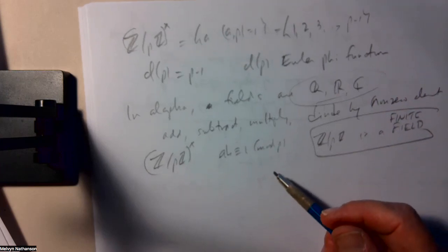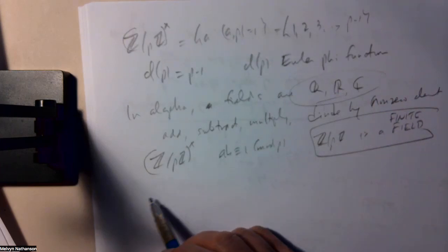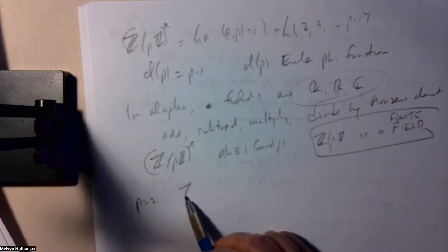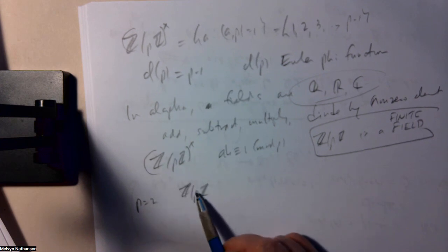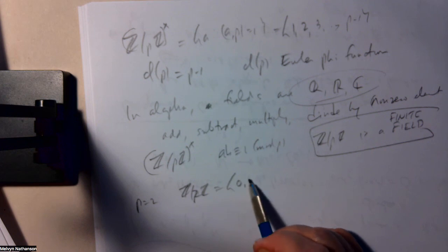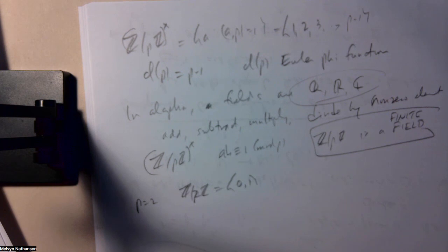In computer science, the simplest example is when p is equal to 2. Z mod 2Z is just 0, 1. Addition mod 2. So this is a field, the binary field. 0 plus 0, 0 plus 1, 1 plus 1 is 0. You can add, subtract, multiply, and divide. This is the simplest example of a finite field.